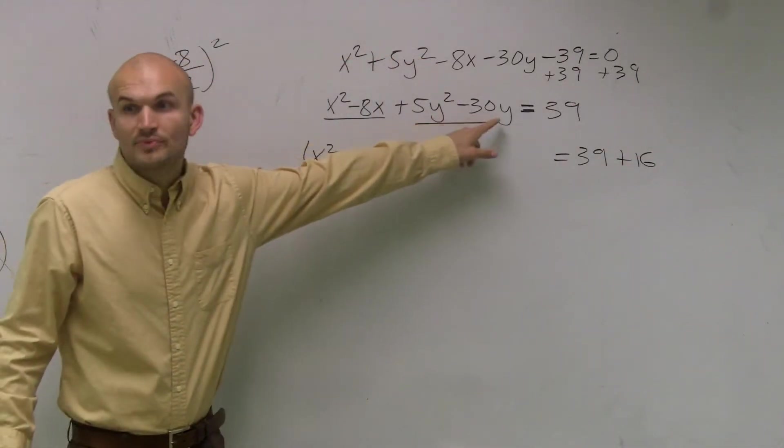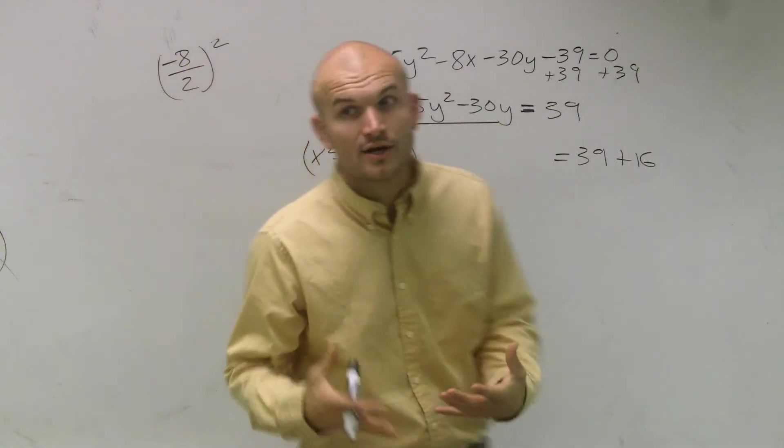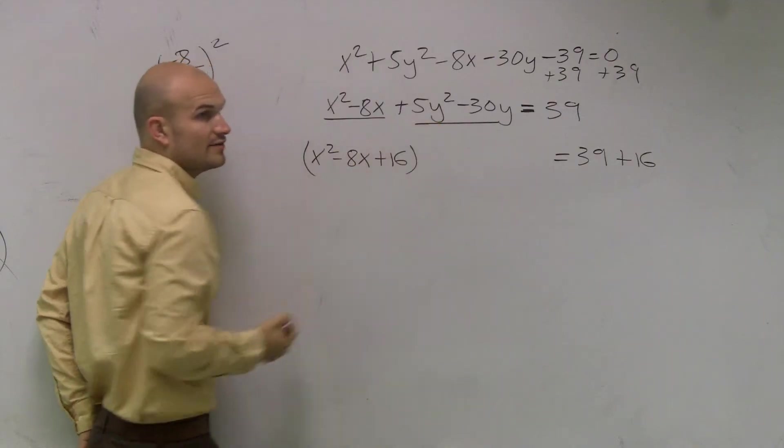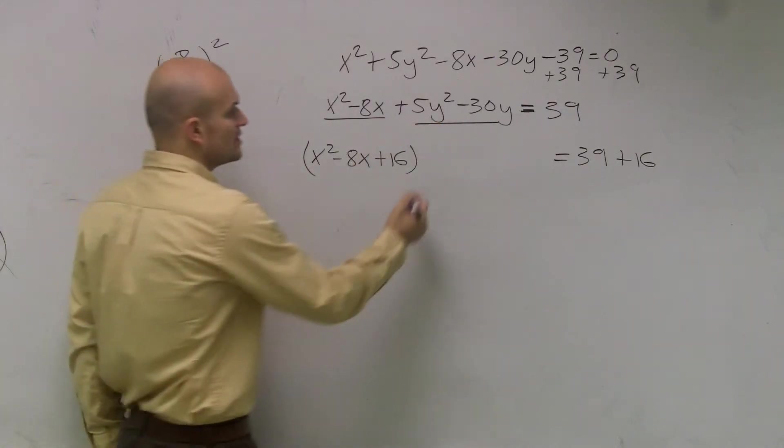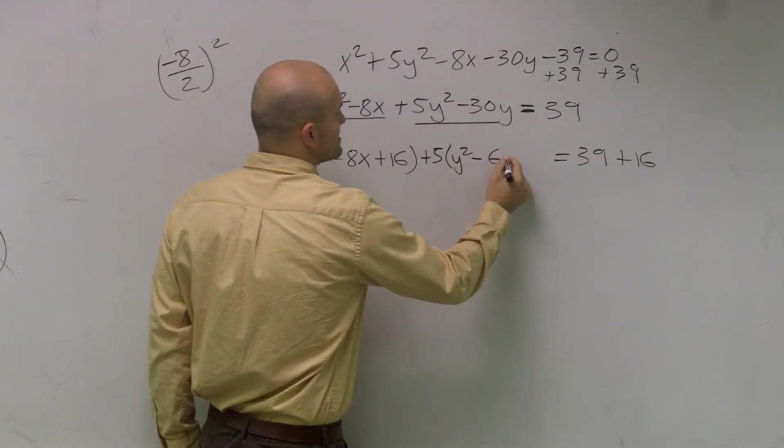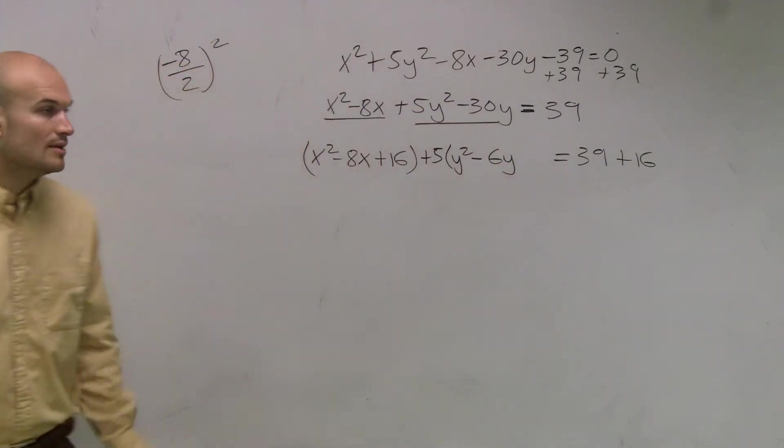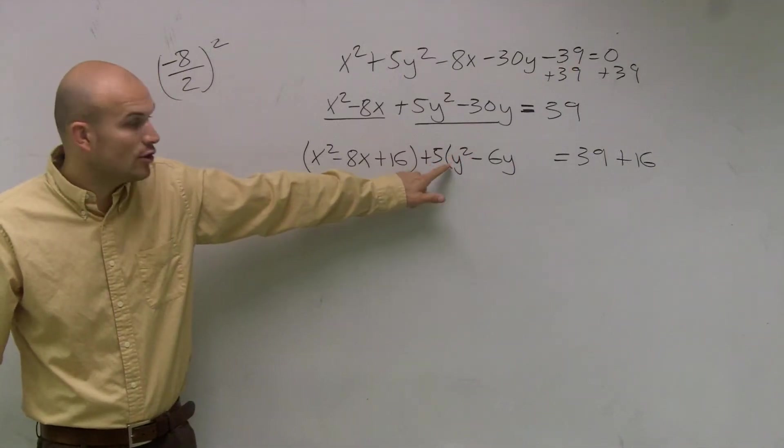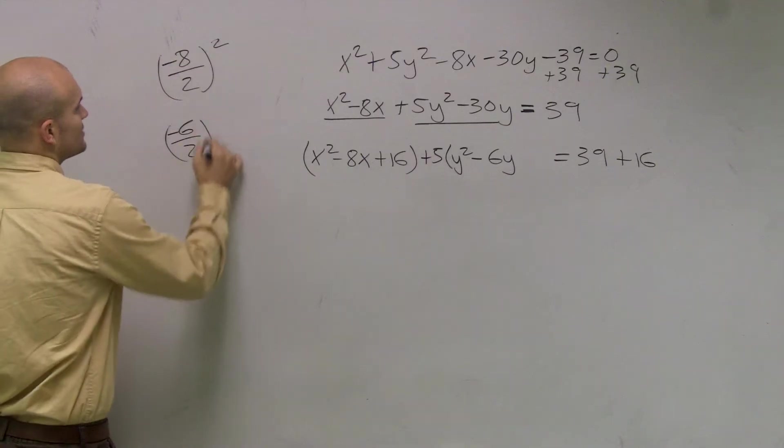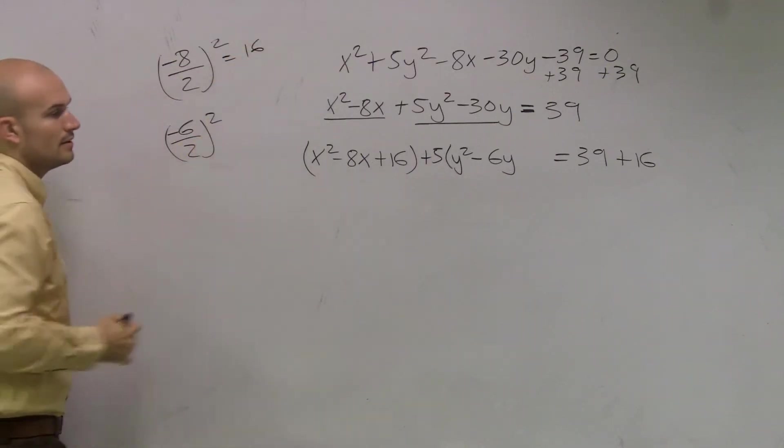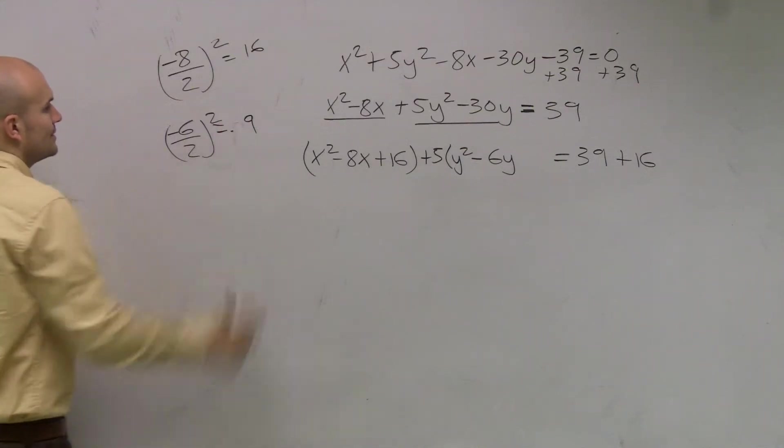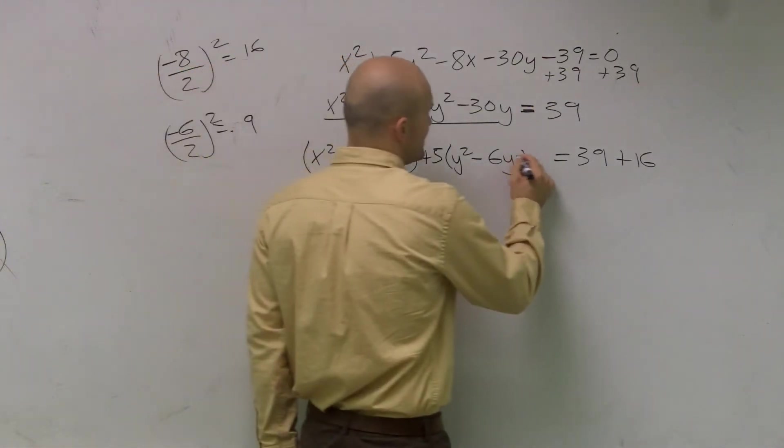Then I need to complete the square for the y's. But remember, to complete the square, you cannot have a coefficient other than 1 in front of your y term. So what I need to do first is factor out a positive 5, y squared, then minus 6y. Now I have this with a coefficient of 1. Now all I need to do is take negative 6, divide it by 2, and square it. And that's going to equal a positive 9.